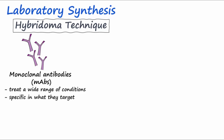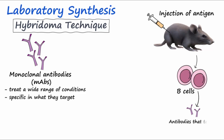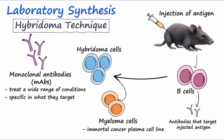Monoclonal antibodies are produced by immunizing a mouse with a certain antigen, causing B cells in the mouse's spleen to generate antibodies that specifically target that antigen. Since these splenic cells don't live long in vitro, they are fused with an immortal cancer plasma cell line known as myeloma cells. This fusion produces a hybridoma, which is cultured to produce many monoclonal antibodies used as drugs to target specific antigens.